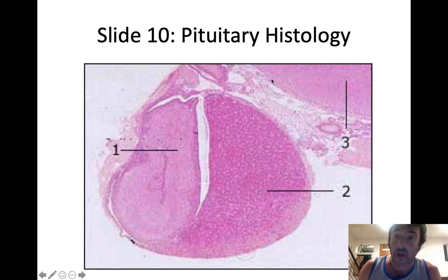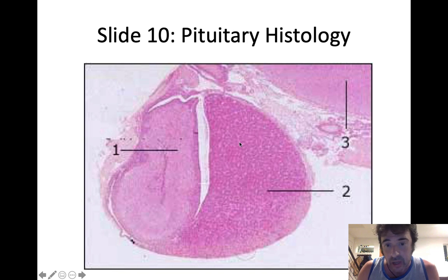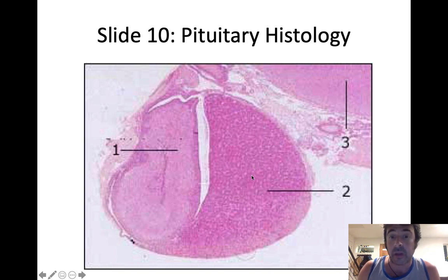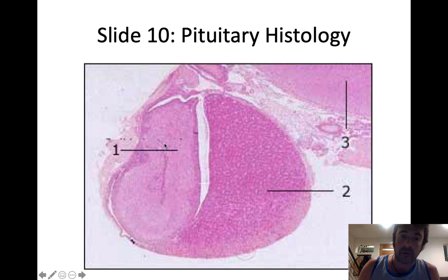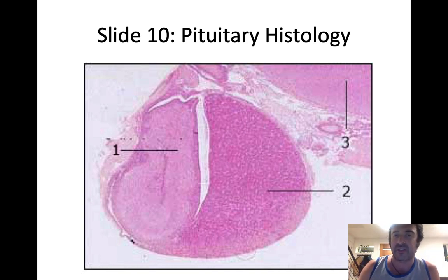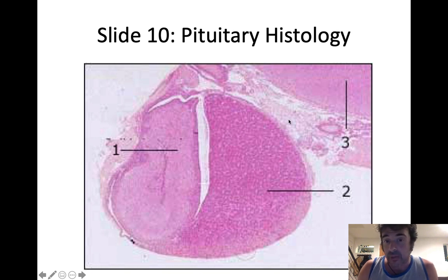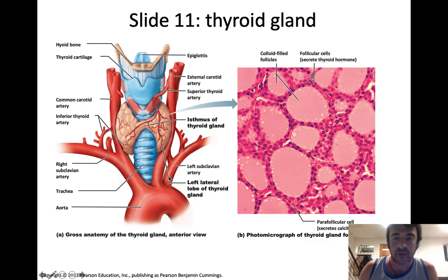Looking at pituitary gland histology: the hypothalamus controls both the anterior and posterior pituitary. The anterior pituitary is larger and stains darker because it's true glandular tissue. The posterior pituitary is smaller and stains lighter because it's essentially an extension of nervous tissue, even though it's an endocrine structure. The infundibulum is not on your list for this class.